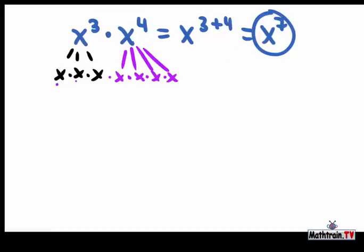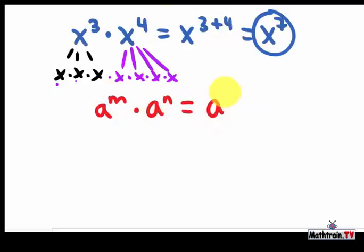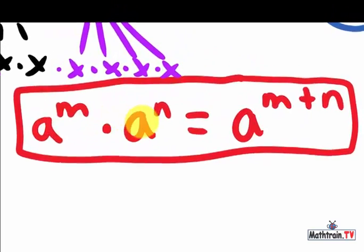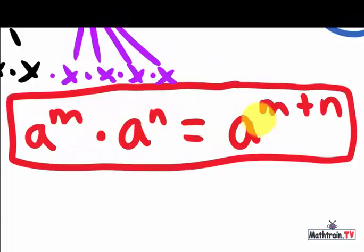We can write this as a to the m times a to the n equals a to the m plus n power. So when you're multiplying powers with the same base, you just add the exponents: a to the m times a to the n equals a to the m plus n power. That's how you multiply powers with the same base — you just add the exponents.